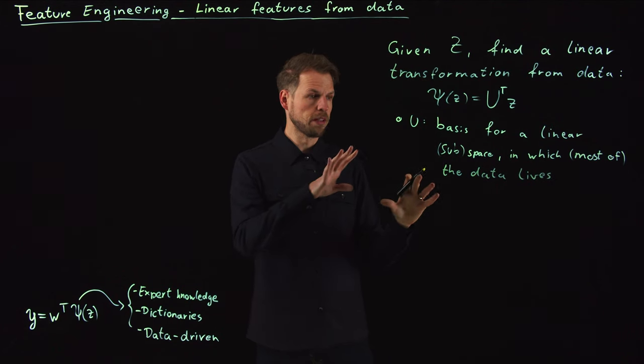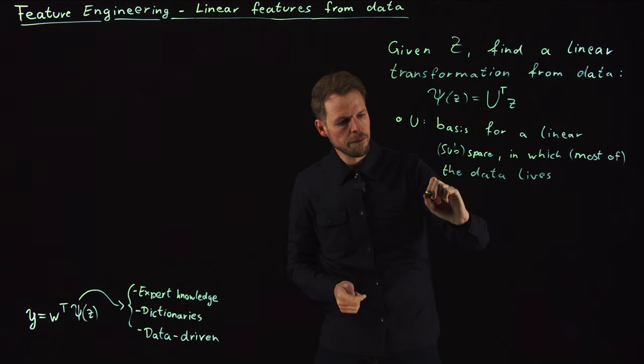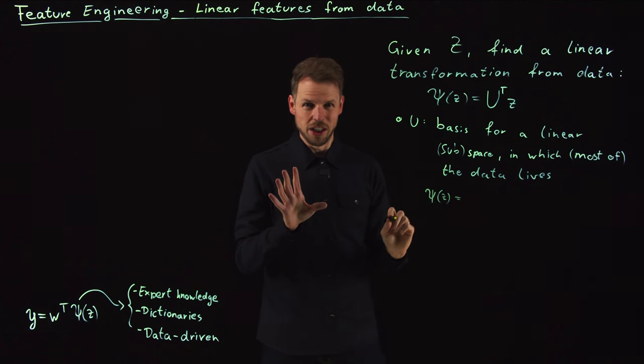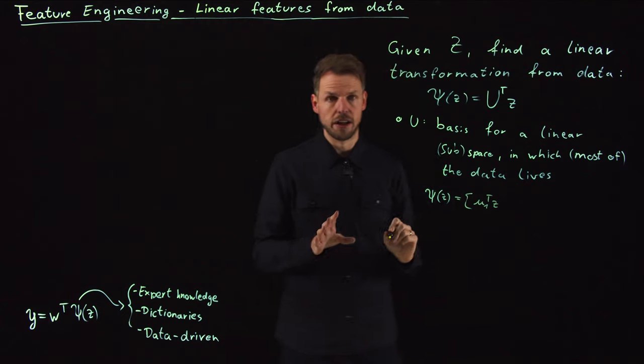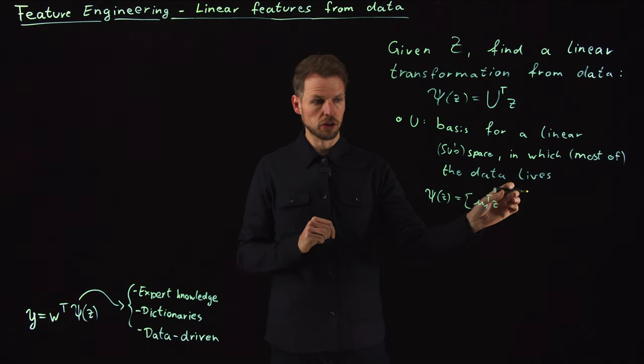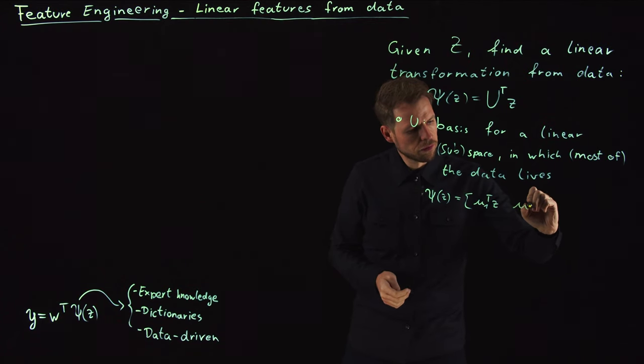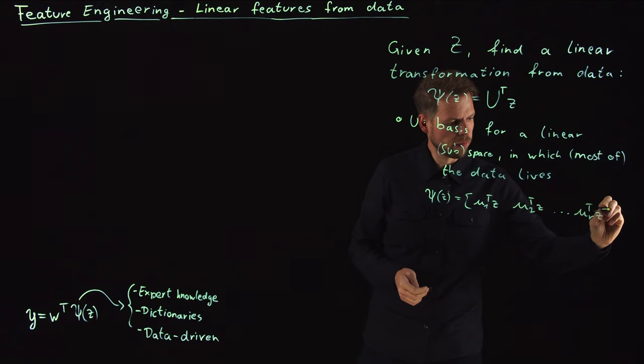If we put psi in a bit more detail, what we will get is that psi of z really is again a dictionary, just as we had it before. But now the dictionary is identified from data. So it's a set of linear functions or linear transformations—these projection operations onto the r functions that we have in our matrices.